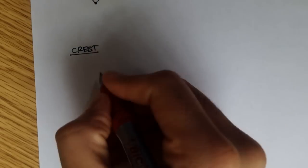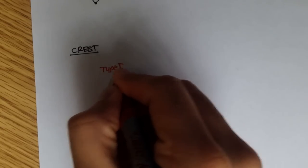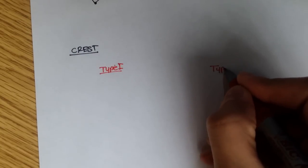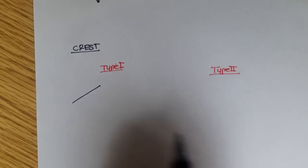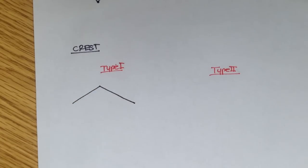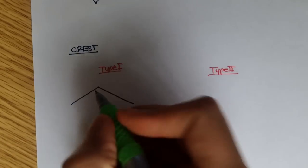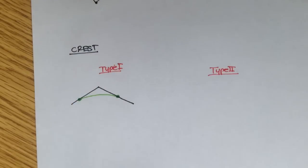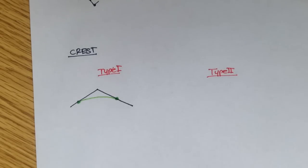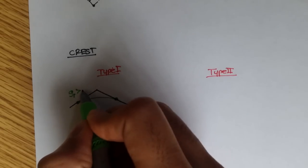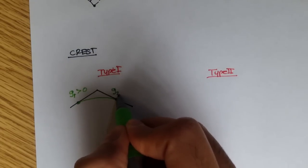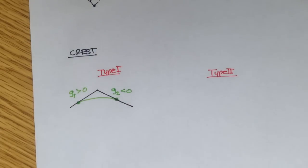There are two types of crest vertical curves. The first one is called Type 1 and the second one is called Type 2. Type 1 curves have an entering tangent and an exiting tangent. The property of a Type 1 crest vertical curve is that the entering tangent, or Grade 1, is positive, and the exiting tangent, or Grade 2, is negative.